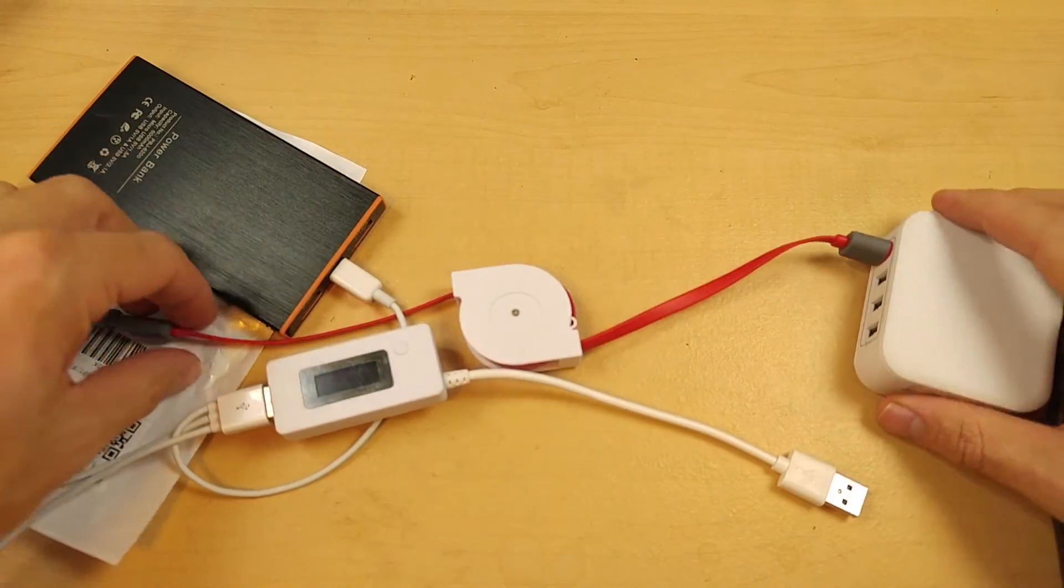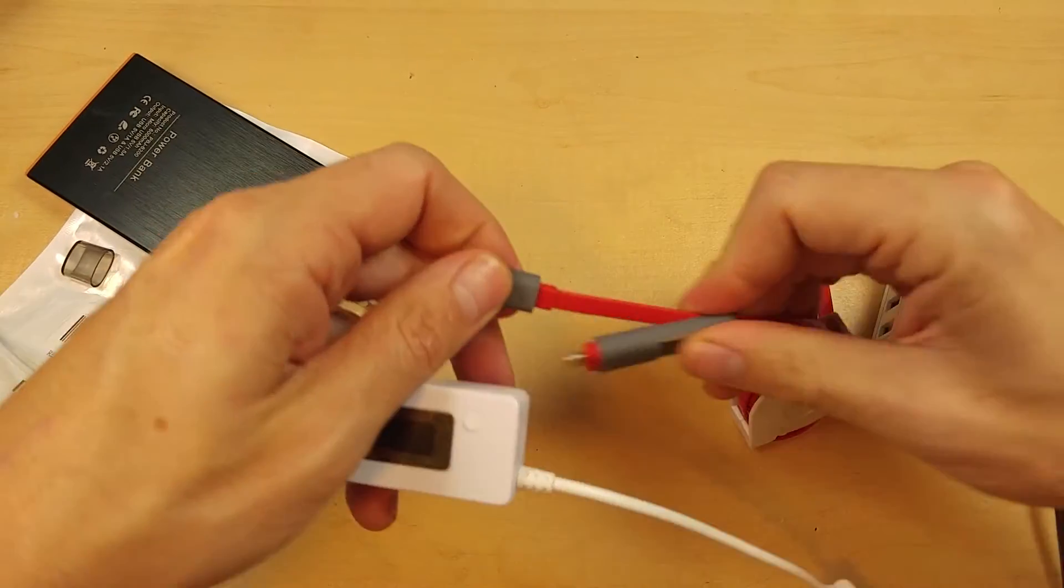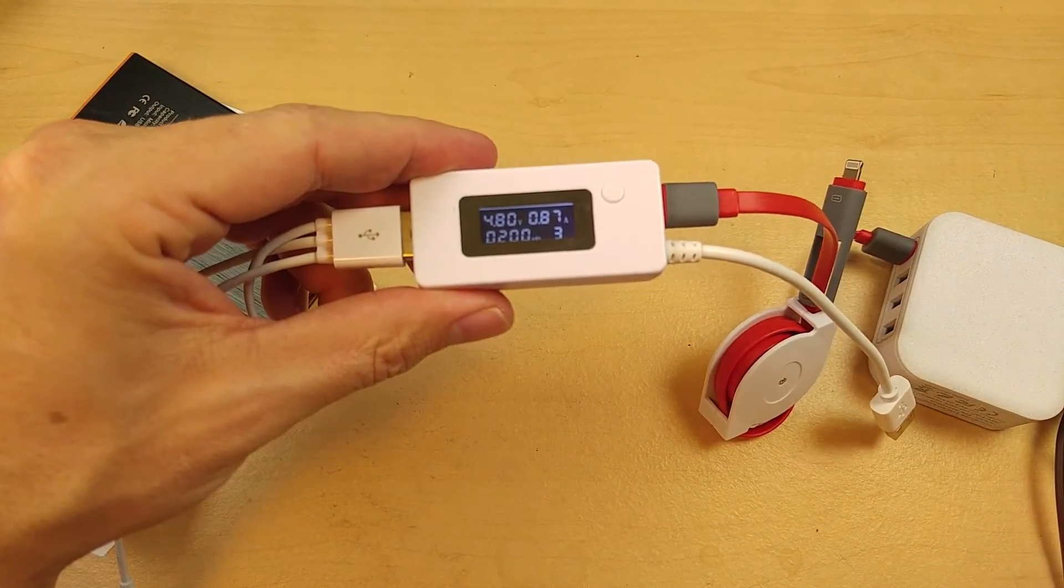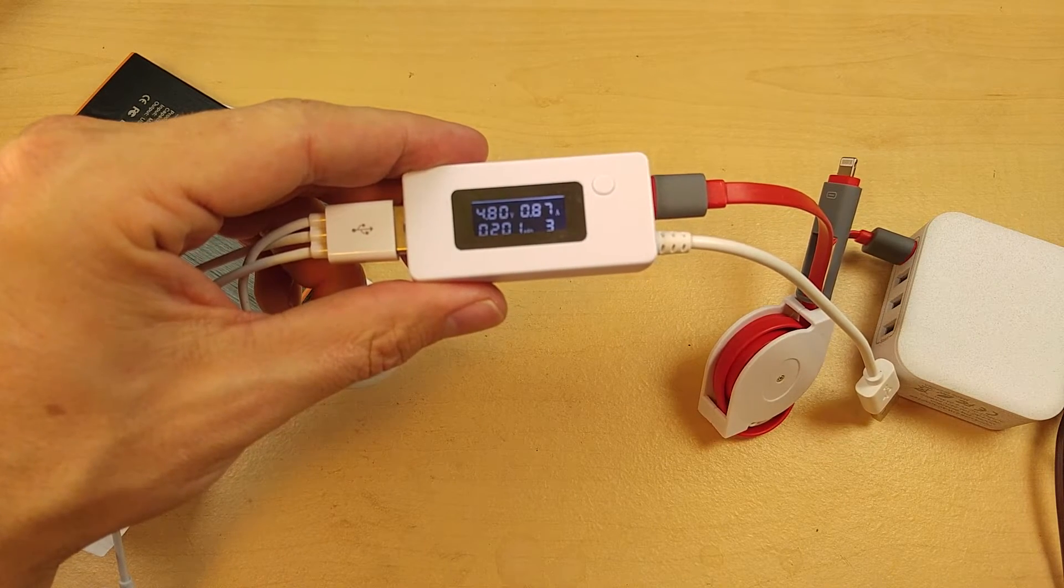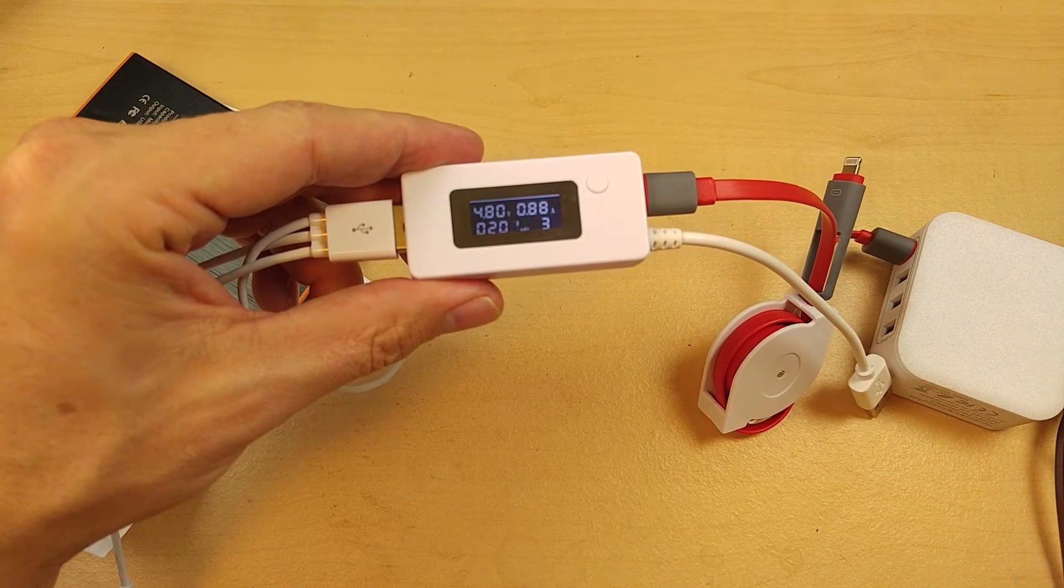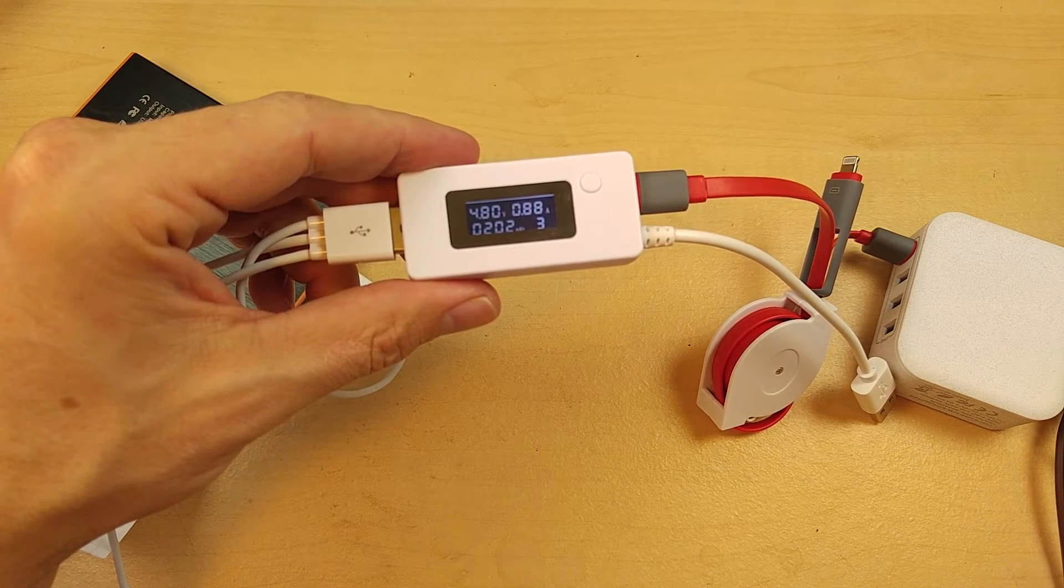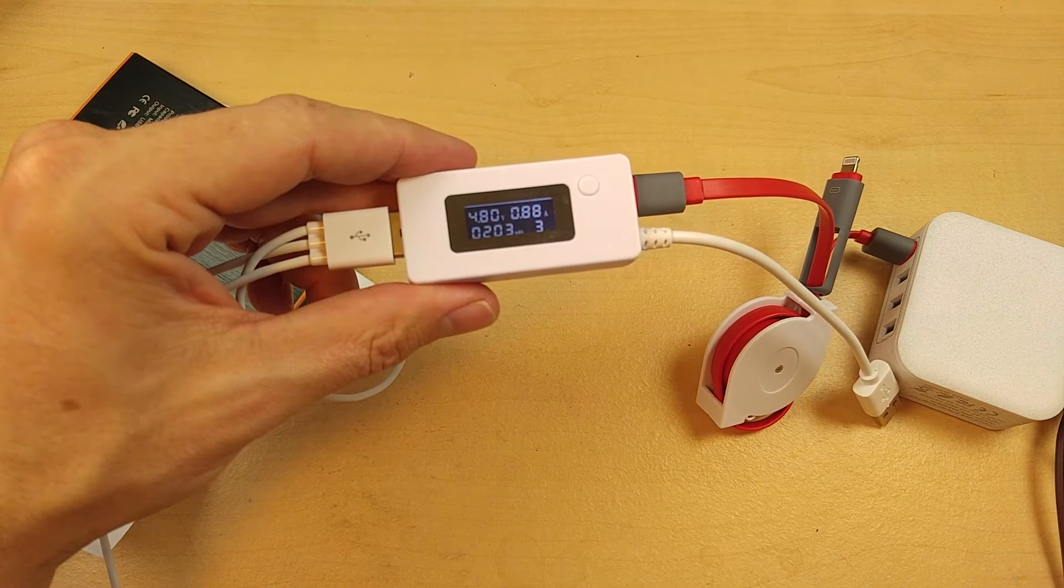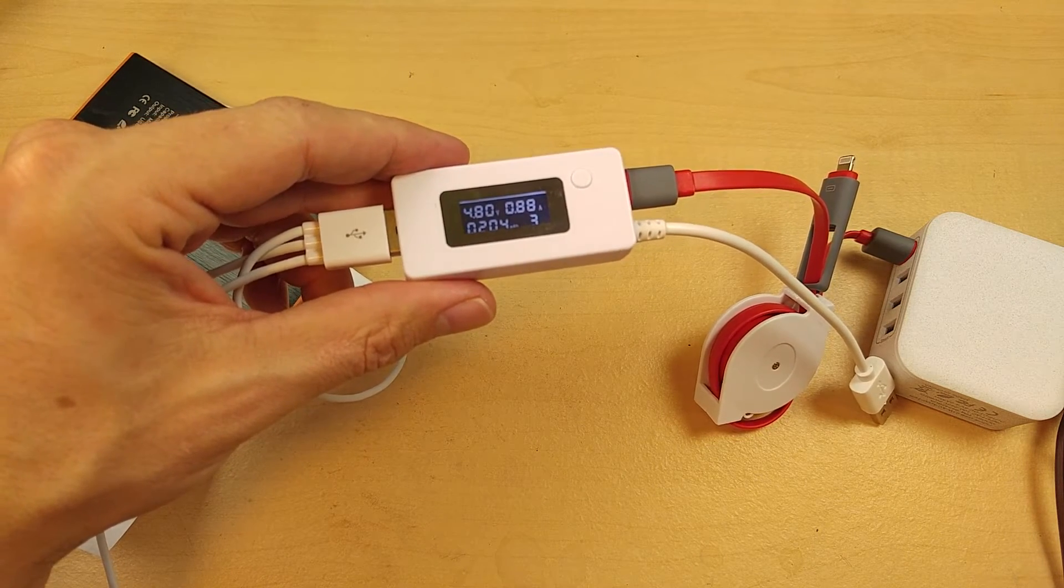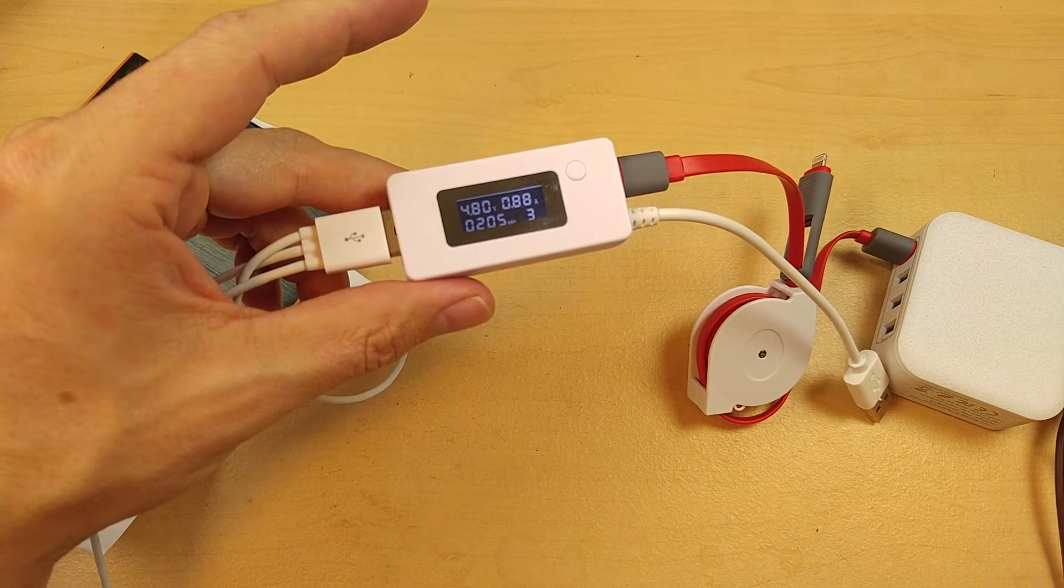Alright, now let's plug the cable in between. And we are at 4.81 volts. So we lost 0.3 volts going through the cable. That's about normal. You're probably going to get that on every cable. Even my higher end cables lose anywhere from 0.25 to 0.3 volts. So we are fully within range there and it is charging at 0.88 amps.